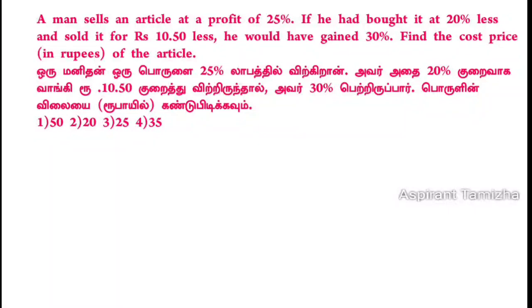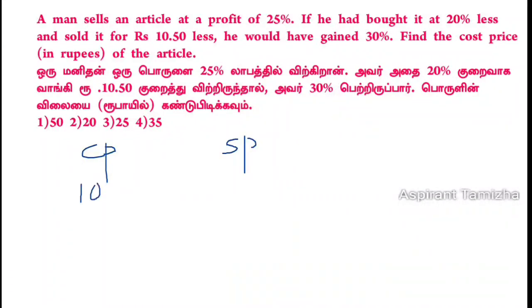Question only, step-by-step. First one: the cost price. Cost price and selling price — 25% profit.